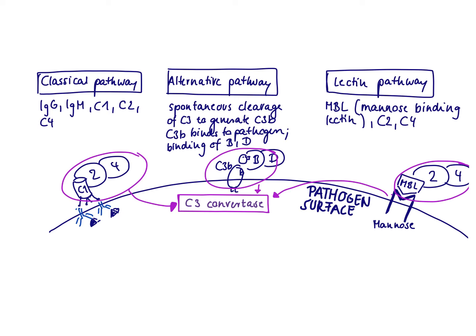The last pathway is the lectin pathway. Many bacteria and other pathogens have mannose on their surface. There is a complement protein called mannose-binding lectin, abbreviated MBL, which can bind to mannose. Once bound, it recruits C2 and C4, and those molecules together form a C3-convertase. So for the lectin pathway, you need mannose on the surface of the bacteria, mannose-binding lectin, and C2 and C4.